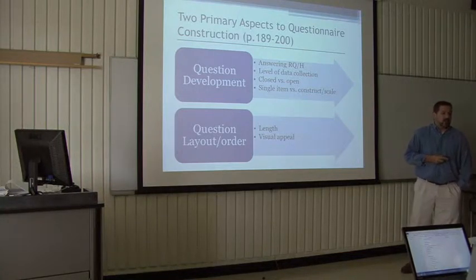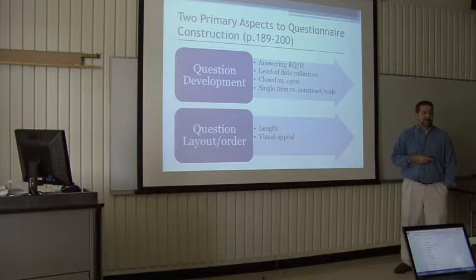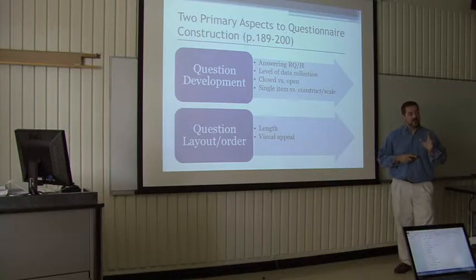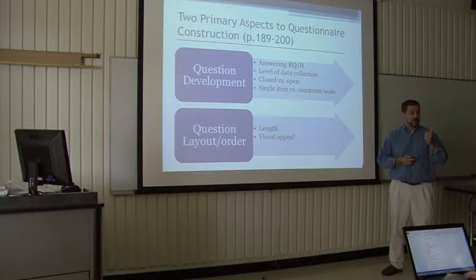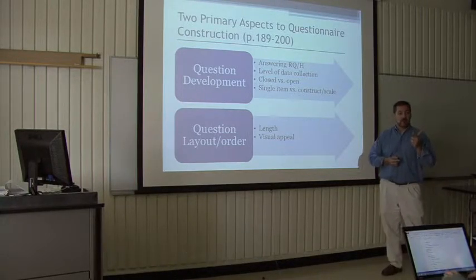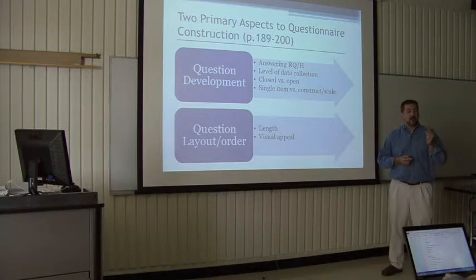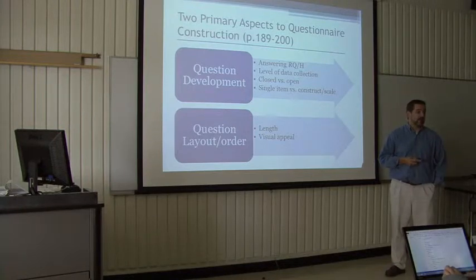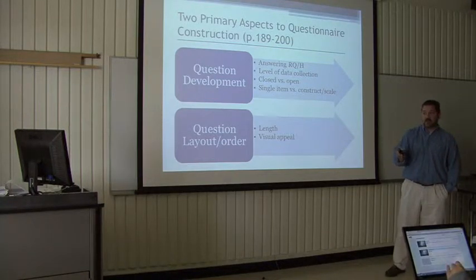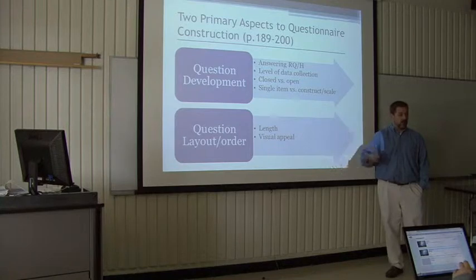You need to think about the level of data collection — how much data you're actually getting from the survey, specifically the levels of variables. One of them was nominal. What are the others? Ordinal. The ratio is the highest level. Interval — that's the fourth one. So you need to think about how high a level of data you're trying to get: Are you trying to find rankings? Are you just trying to find demographics? Are you trying to find if there's an absolute zero and where they fall on that scale?